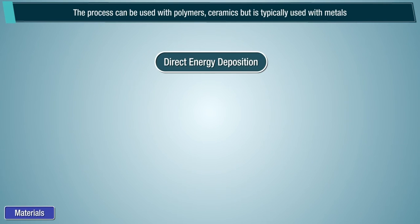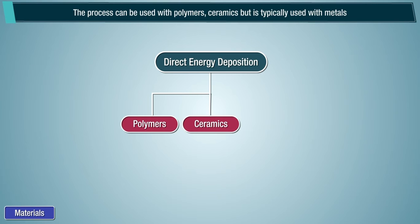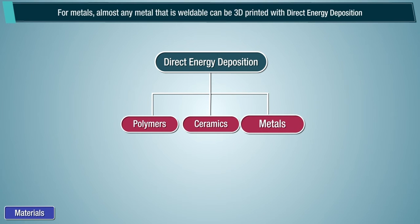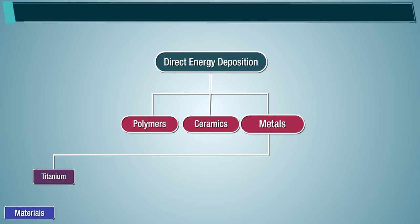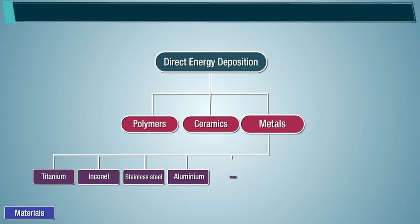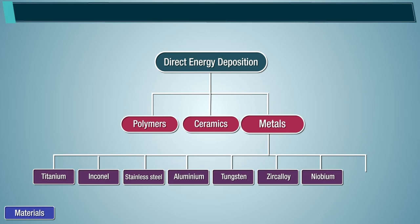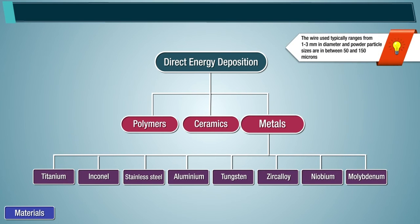The process can be used with polymers and ceramics, but is typically used with metals. Almost any metal that is weldable can be 3D printed with direct energy deposition, including titanium, Inconel, stainless steel, aluminium, tungsten, zircaloy, niobium, and molybdenum. The wire used typically ranges from 1 to 3 mm in diameter and powder particle sizes are between 50 to 150 microns.